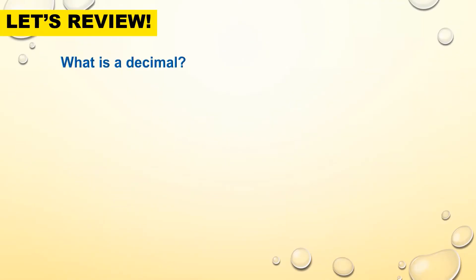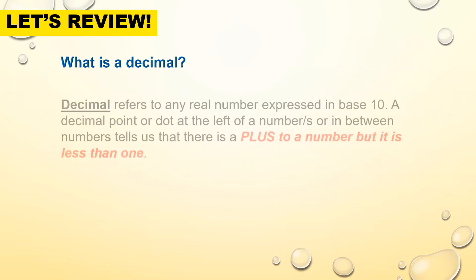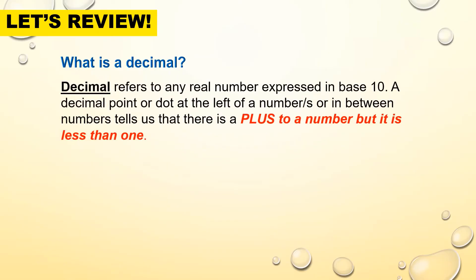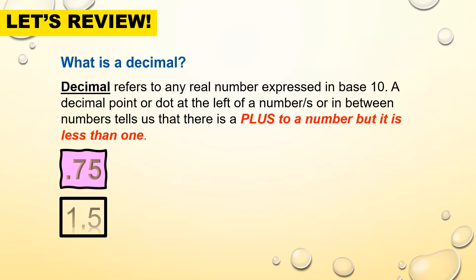Let's start with a review. What is a decimal? Decimal refers to any real number expressed in base 10. A decimal point, or dot, at the left of a number or in between numbers tells us that there is a plus to a number, but it is less than one. For example, when you say seventy-five hundredths,